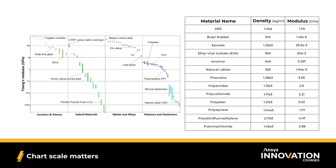One thing to note, which will be important throughout this course, is the scale used in these plots. If we plot our materials data with a linear scale, shown here on the left, it's difficult to distinguish data for small values, such as those for our polymers — they all seem to have the same value for Young's modulus. But that can't be correct. If we change to a log scale, shown here on the right, the differences between property values and trends in the data are much easier to see.